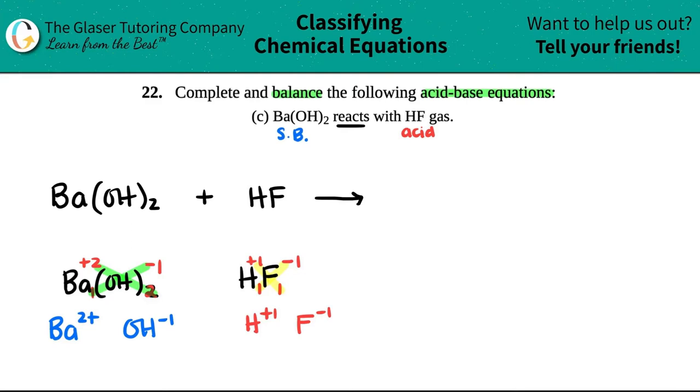Now with all double displacements and acid-base reactions, the outers hook up with the outers and the inners hook up with the inners. If you write your ions like this, the outer guys, Ba 2+ and F-, you see how they're the outer ones of these four ions, the outer ones will make a new compound. They will hook up with each other. And then the inner ones will hook up with each other. So outers with outers and inners with inners.